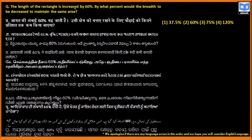The length of a rectangle is increased by 60%. By what percent would the breadth need to be decreased to maintain the same area? A 60% increase means the length increases by 3 out of 5, where L is the variable representing length.